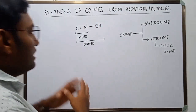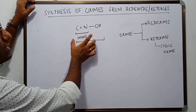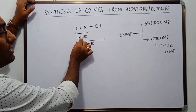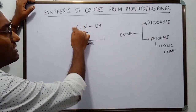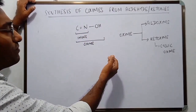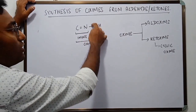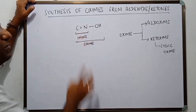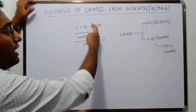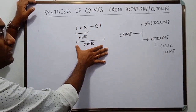Simply stated, an imine is the functional group carbon double bond nitrogen. Compounds that have this kind of functional group are called imines. An oxyme is when a hydroxy group is attached to the nitrogen of the imine. Oxymes are those compounds in which the hydroxy group is attached to the nitrogen of the imine.